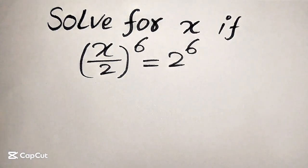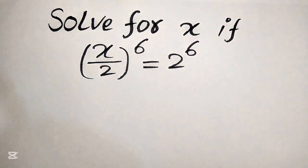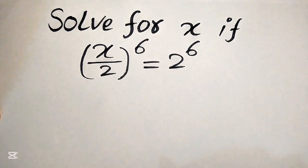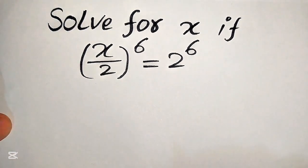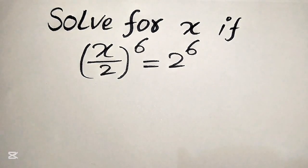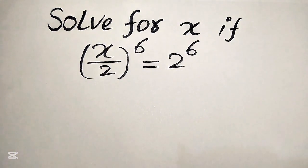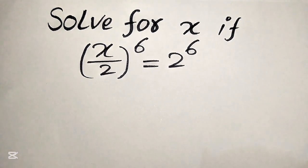Hello everyone, welcome to solve this nice math or algebra problem. So here we have x over 2 to the power of 6 is equals to 2 to the power of 6, and we solve this problem for the values of x.